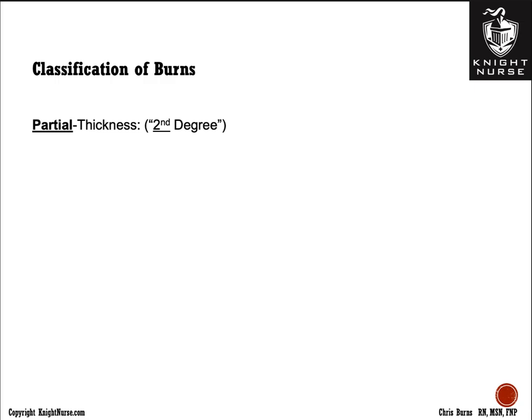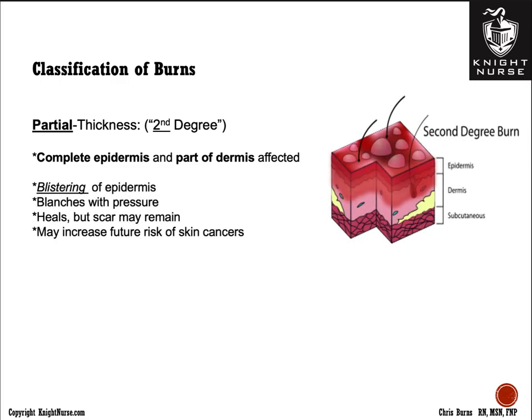The next degree is a partial thickness second degree burn. It's partial because it has gone completely through the epidermis layer and penetrated part of the dermis layer. The dermis is our living tissue, so when you damage the living tissue, this leads to fluid loss from the dying cells — so we get blistering. Partial thickness second degree burns are known for blistering of the epidermis.